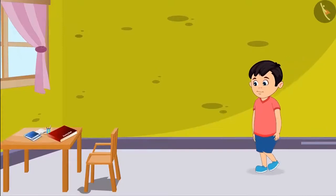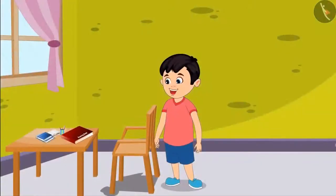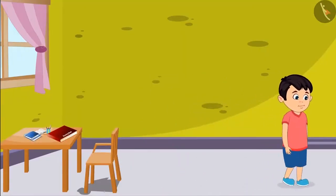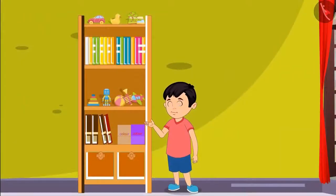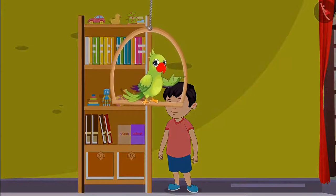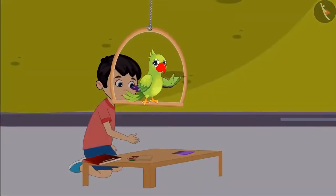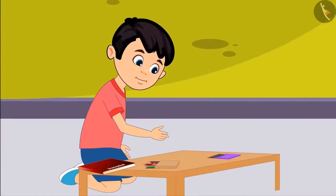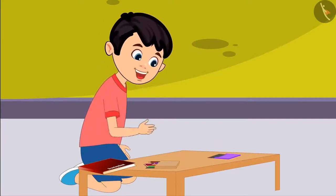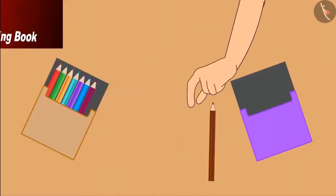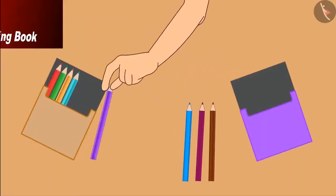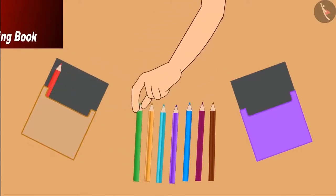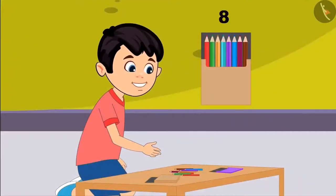Today Chotu found his coloring book on the desk. He goes to get his colors from his almira. Here are both my color boxes. Chotu sits down with his color boxes to color. What is this? There is not a single color in this box! Let me count all the colors I have: one, two, three, four, five, six, seven, eight. This box has eight colors.